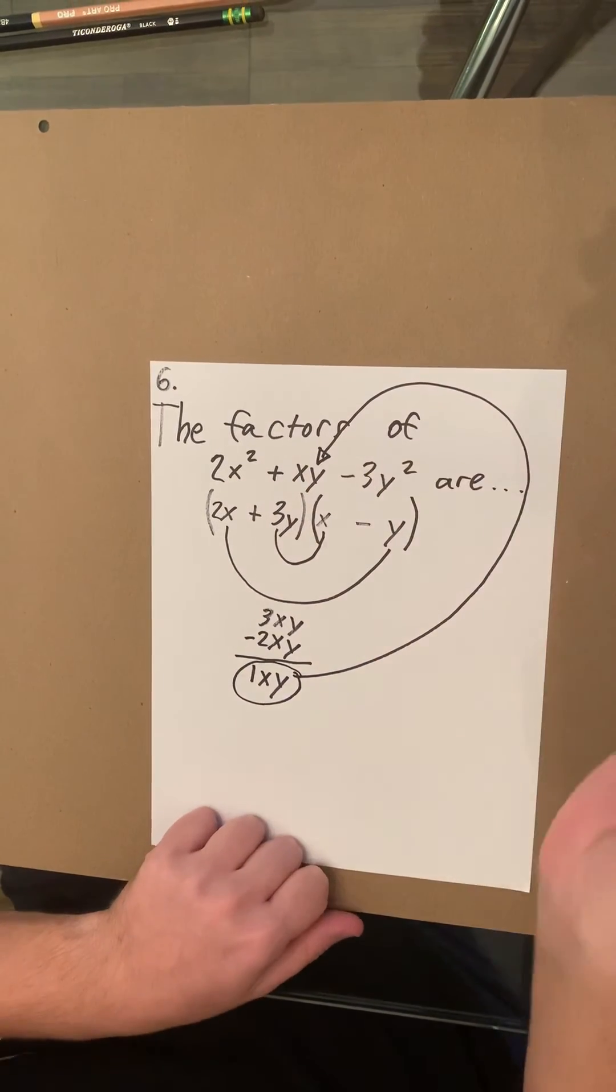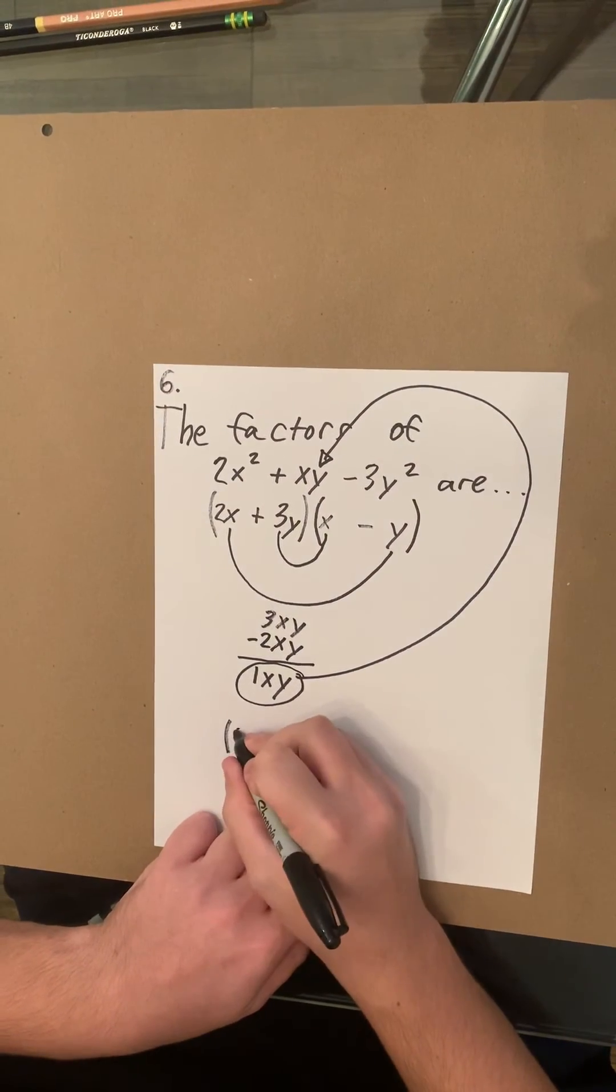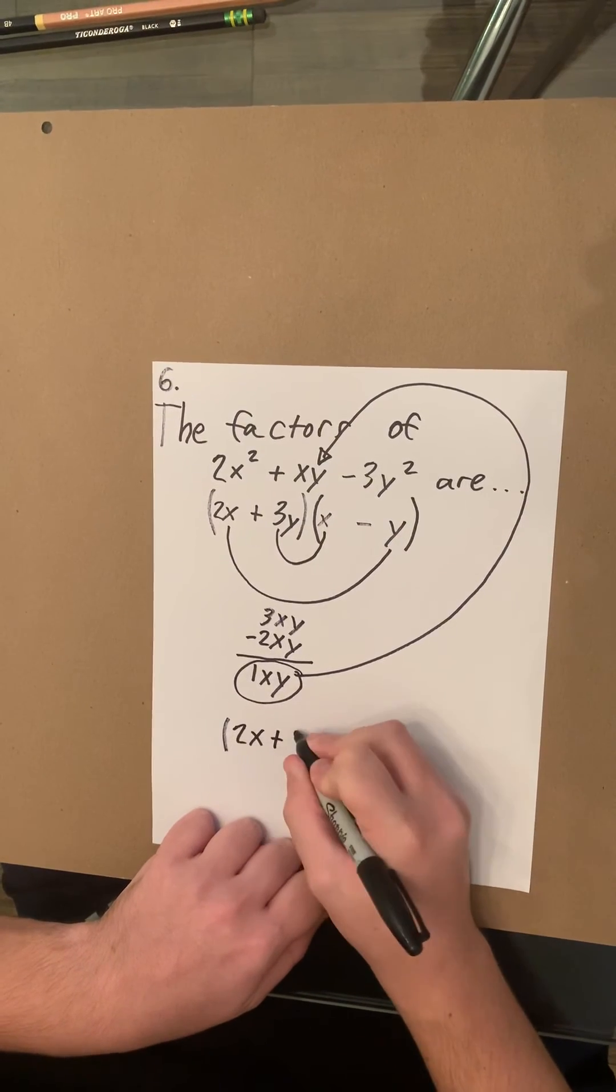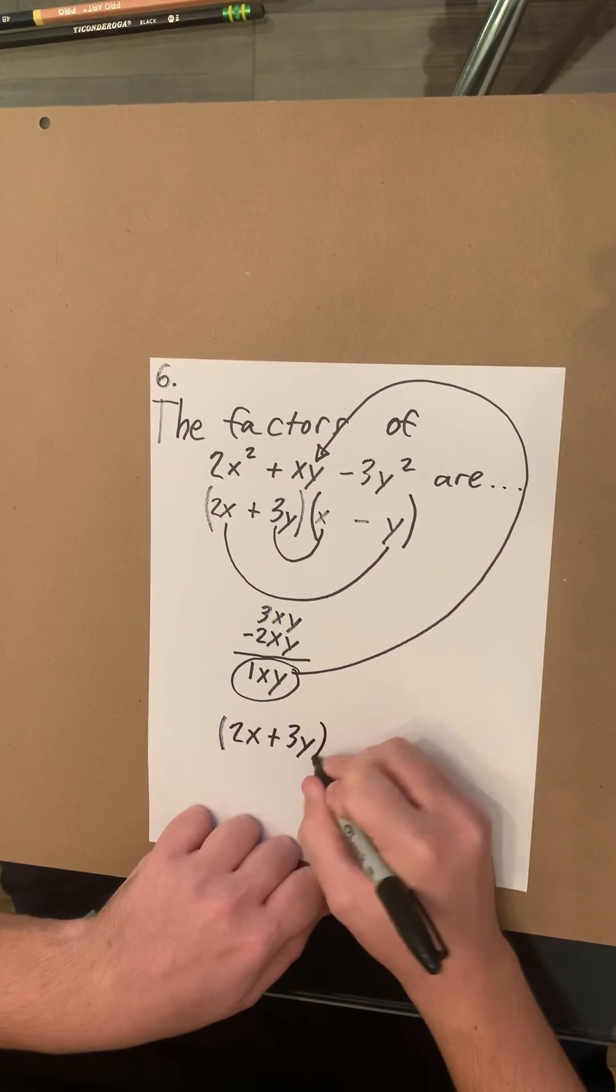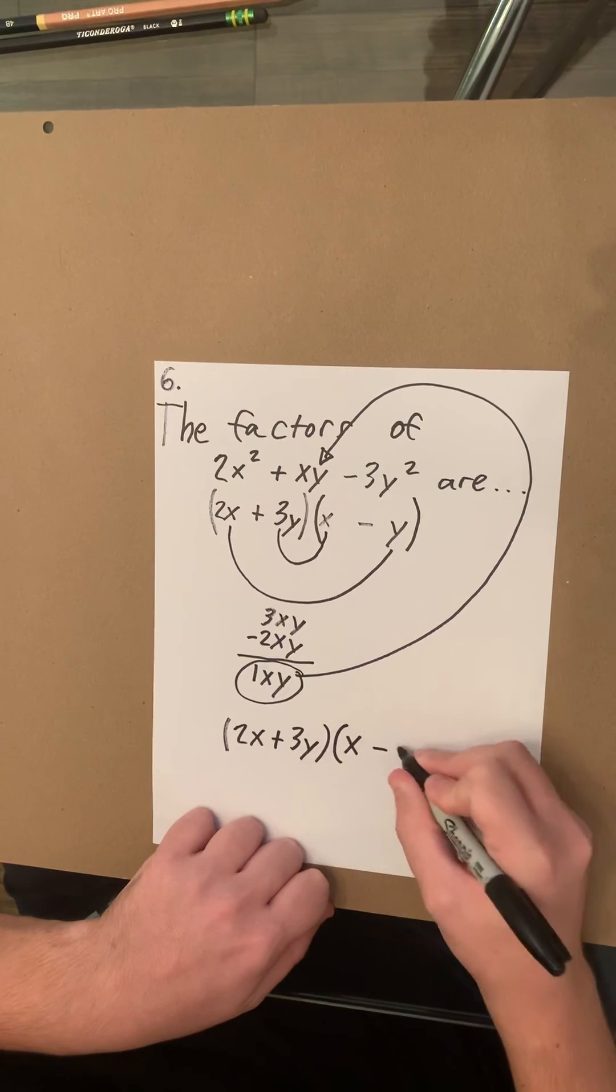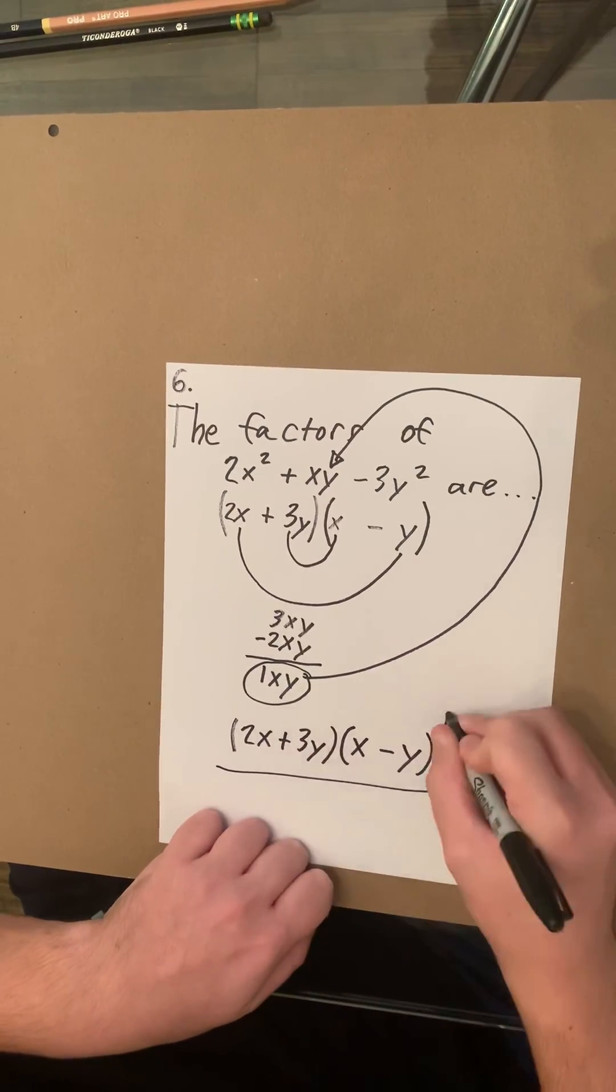They match, so your answer is correct. Your final answer is (2x + 3y)(x - y).